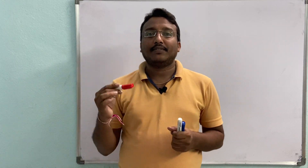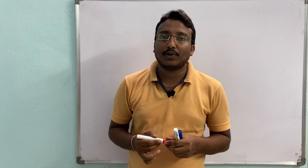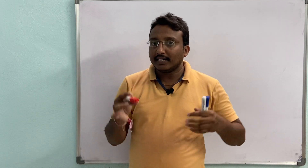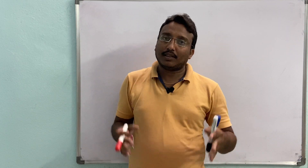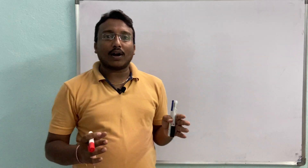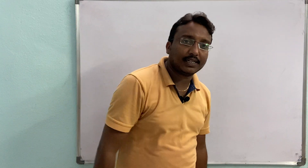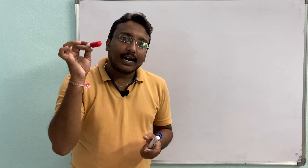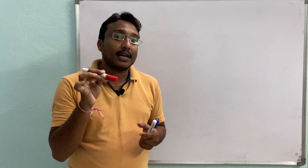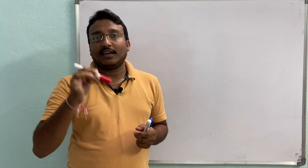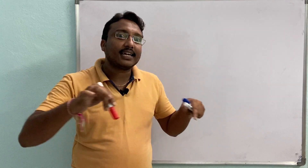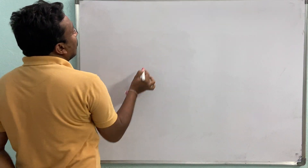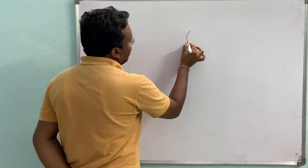In our last class, we discussed about myopia. Myopia is a defect where the person is unable to see far objects clearly. The myopia defect can be corrected by using a concave lens.